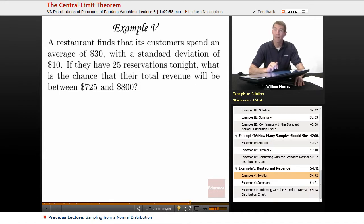So the restaurant, their average is $30 and they have 25 reservations tonight. It's a reservation only restaurant. You can't just walk in. They're expecting 25 customers tonight. They want to know the chance that their total revenue tonight will be between $725 and $800.